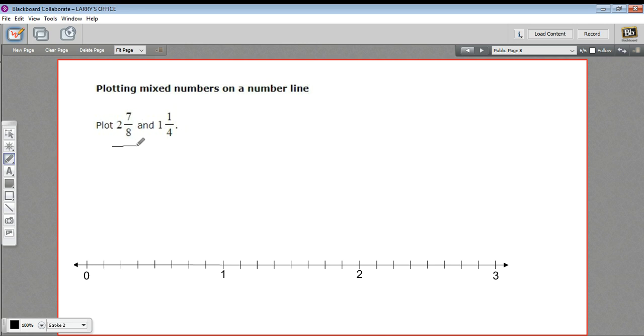So let's try plotting 2 and 7/8. So first I'm gonna go to 2. Start from 2 and then count out 7/8. So 1, 2, 3, 4, 5, 6, 7/8. So this is 2 and 7/8.